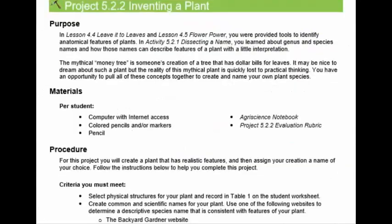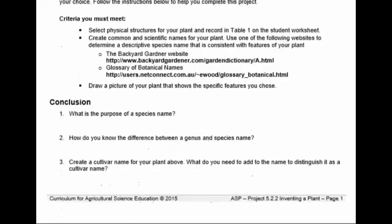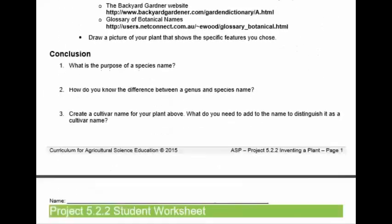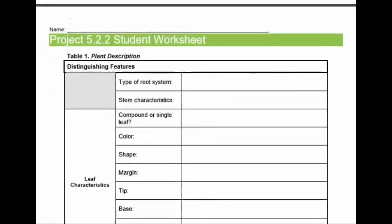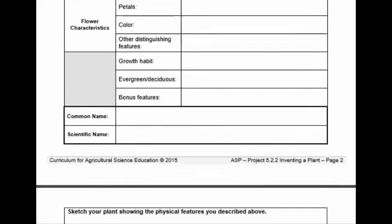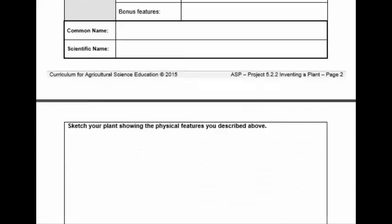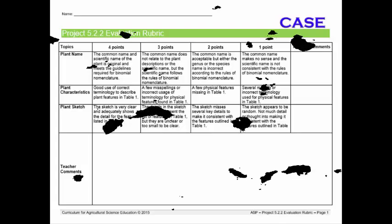Through Project 5.2.2, Inventing a Plant, you will create a name for a fictitious plant using the binomial nomenclature system in order to understand how plants are named and classified. Your teacher will provide instructions and the rubric to be used for the new plant species you will invent and name.